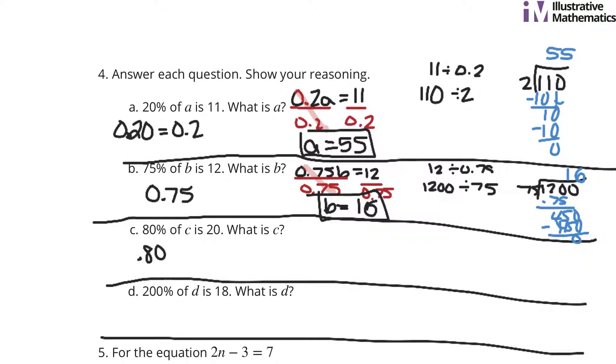80% of C is 20. So 80 hundredths is the same thing as 8 tenths. What is C? Well 8 tenths of C is 20. Divide by 8 tenths on both sides. And so we're looking at 20 divided by 8 tenths. Multiply both by 10. You get 200 divided by 8. 200 divided by 8 is what we're looking for. 8 goes into 20 two times. Subtract away the 16, left with 4 and a zero. It goes into 40 five times. And so you end up with 25. C equals 25.